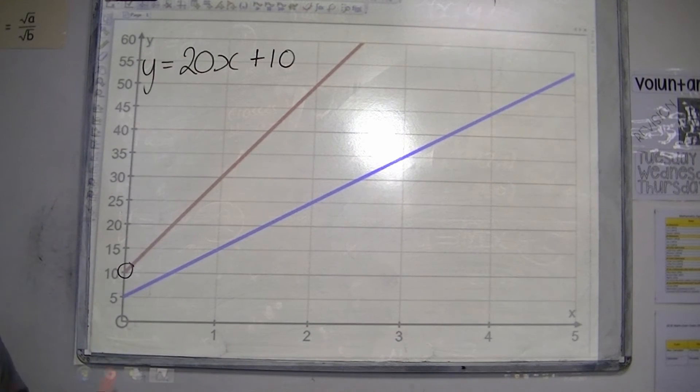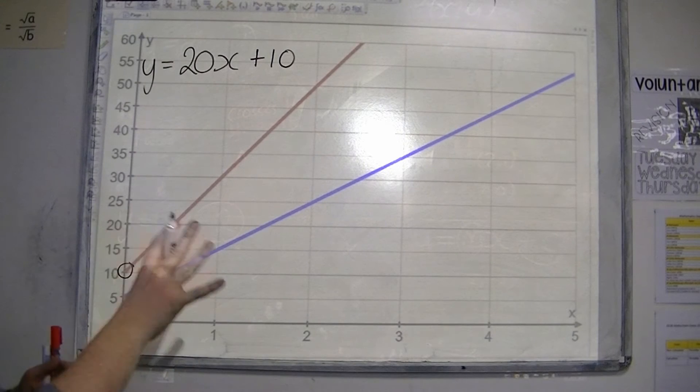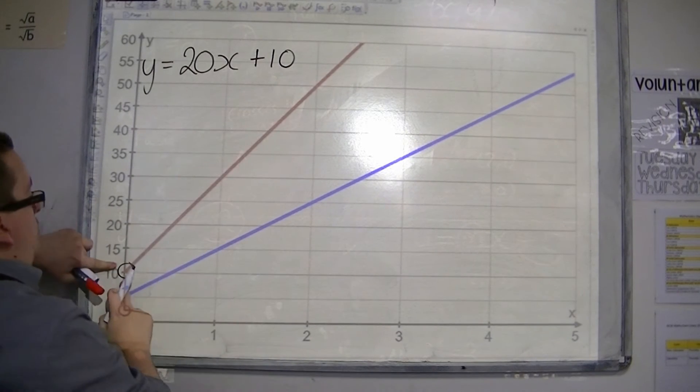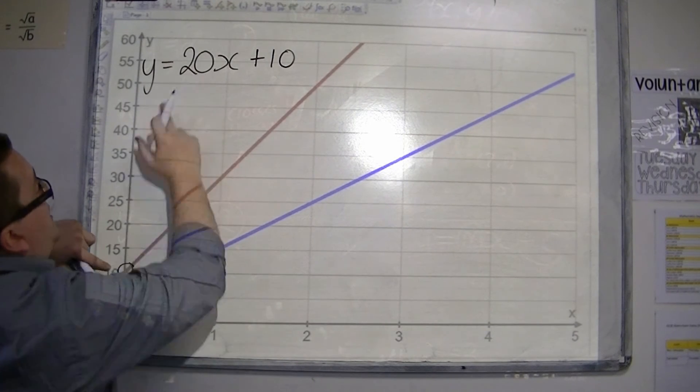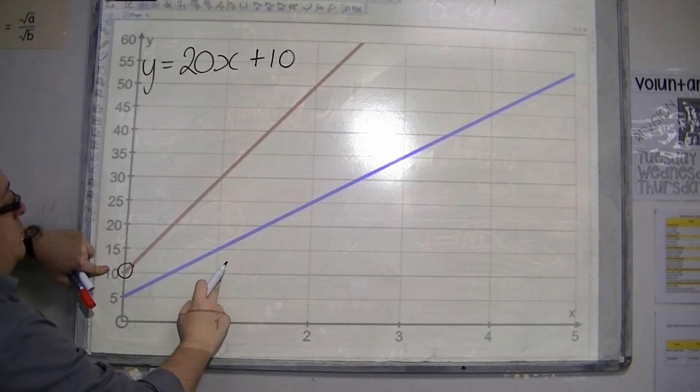And so we can write it as y equals 20x plus 10. The 10 identifying where it crosses the y-axis, and 20 being the gradient. One along, 20 up.